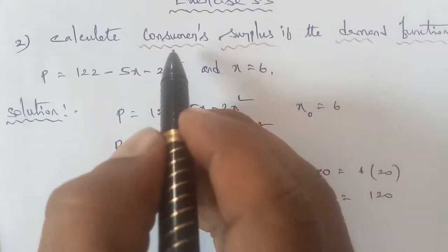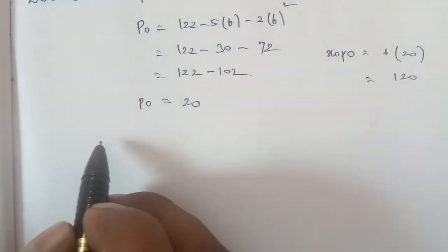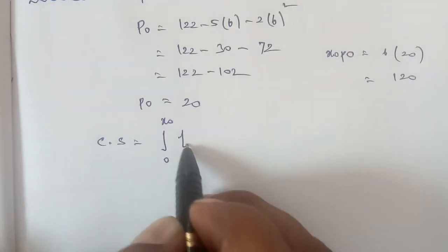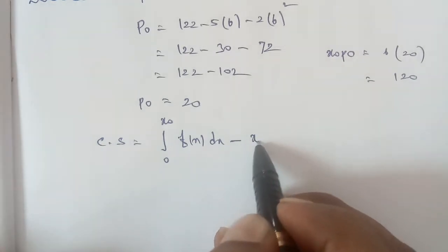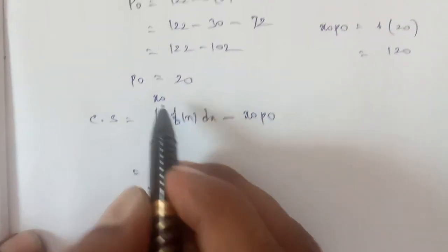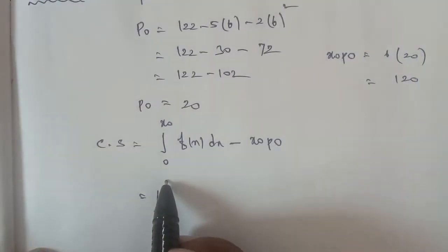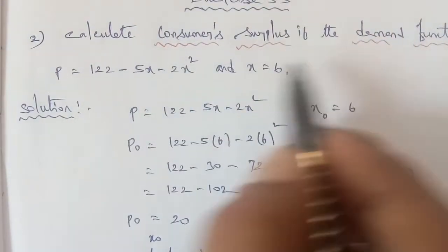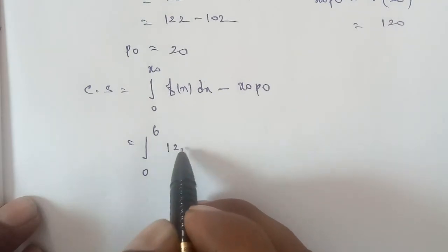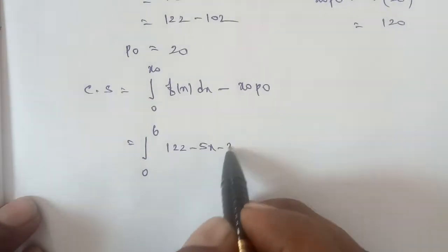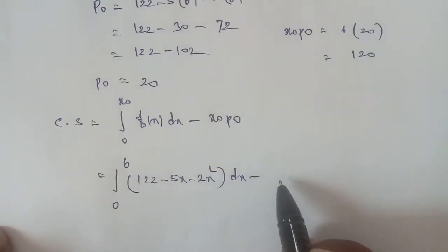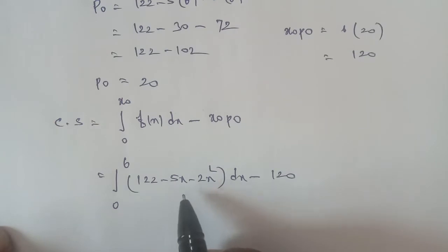The consumer surplus formula is: integral from 0 to X₀ of f(x) dx minus X₀ times P₀. The upper limit X₀ is 6, and f(x) is the demand function: 122 minus 5X minus 2X squared. So we set up the integral from 0 to 6 of (122 minus 5X minus 2X squared) dx, minus X₀ times P₀.